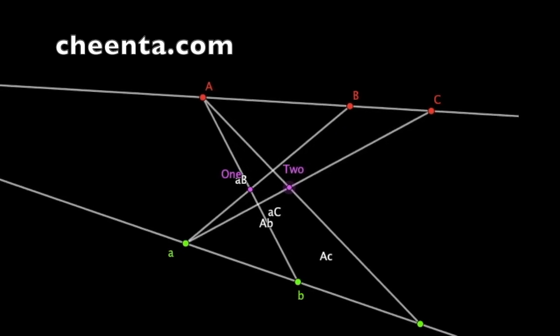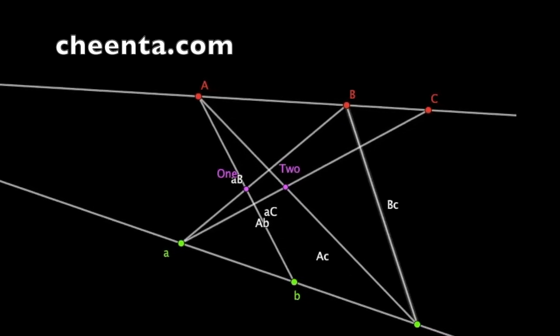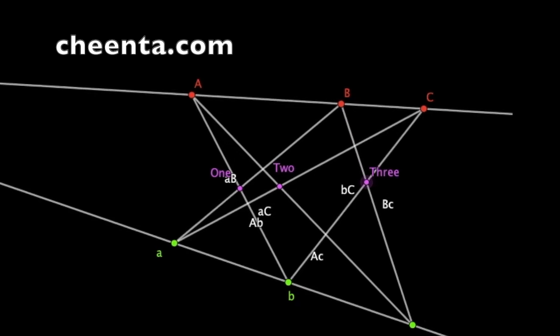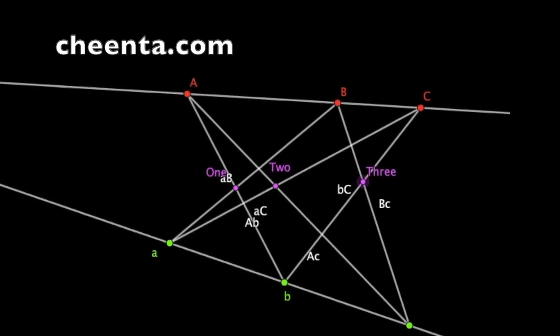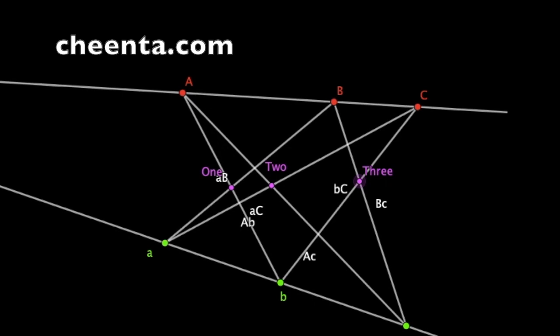And finally join B, c and b, C. And their intersection point is 3. Do you notice anything in particular about these points 1, 2, 3?